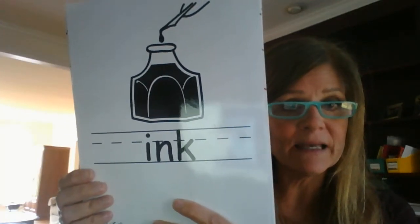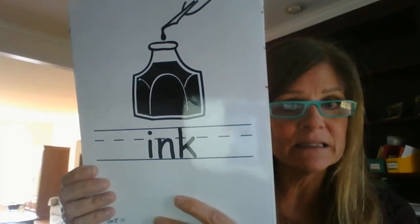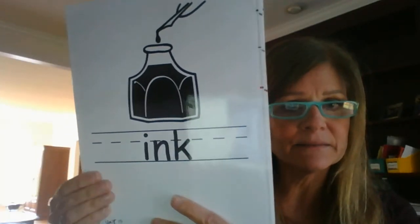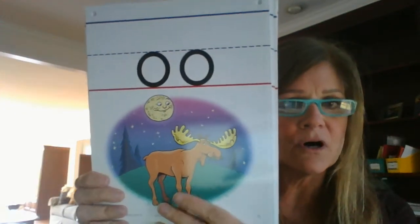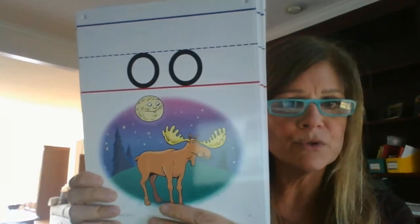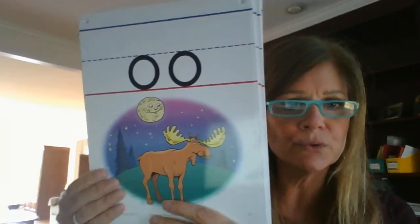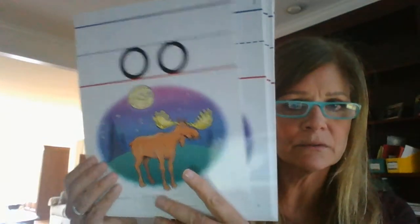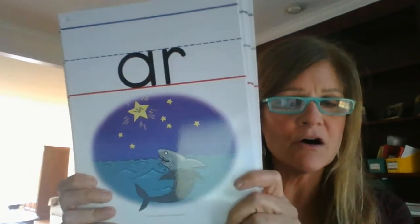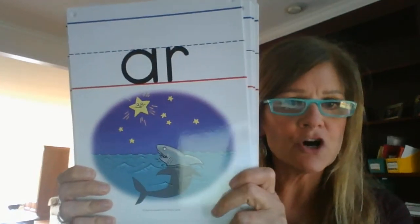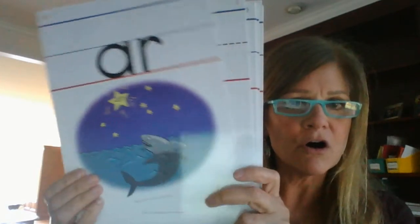I, N, K, Ink — Ink. O, O, Moose — Oo. A, R, Shark — R.